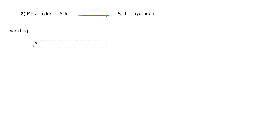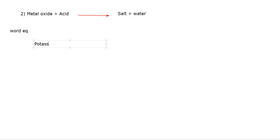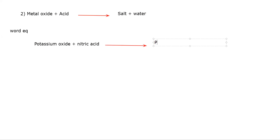Example: potassium oxide plus nitric acid — what will be the product? The product is potassium nitrate plus water. If you want to write a symbolic equation for this reaction: potassium oxide — you have to work out the valency. Potassium is group one so it's plus one; oxygen belongs to group six so it is minus two. The two valencies are not the same so you cross multiply.